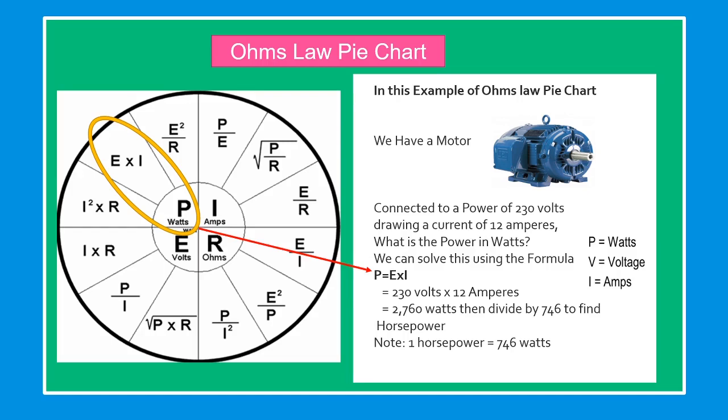P equals E times I equals 230 volts times 12 amperes equals 2,760 watts, then divide by 746 to find the horsepower. Note that one horsepower equals 746 watts.